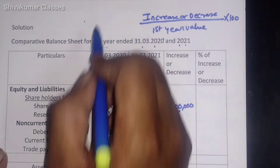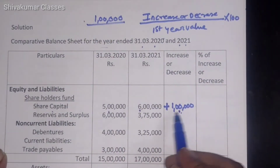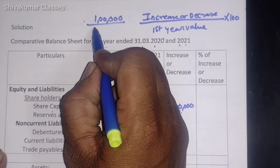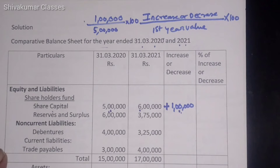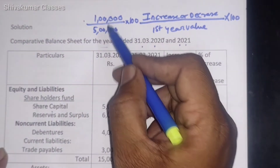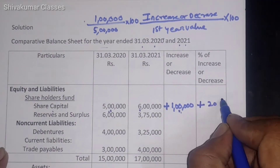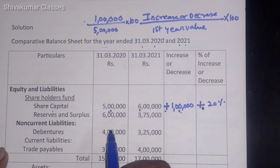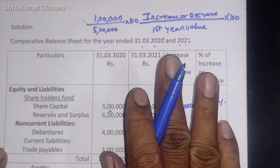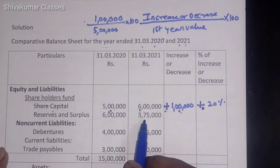For Share Capital: 5 lakh and 6 lakhs — when comparing first year and second year, it is increased by 1 lakh. So: 1 lakh divided by 5 lakhs, multiplied by 100 — we get 20%. Since it is increased, here also the increased symbol Plus. That's it for Share Capital in the Comparative Balance Sheet.